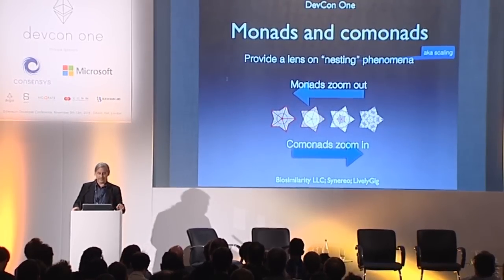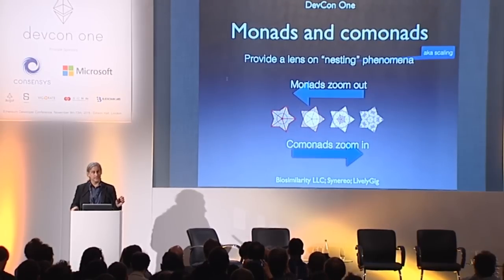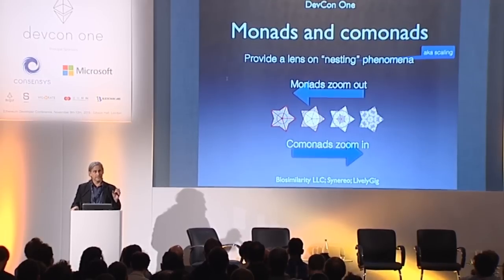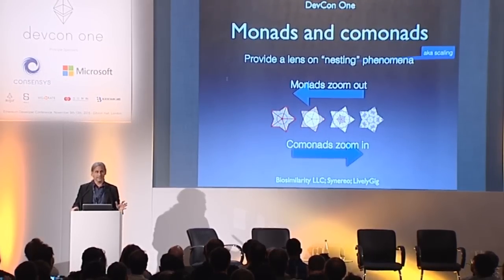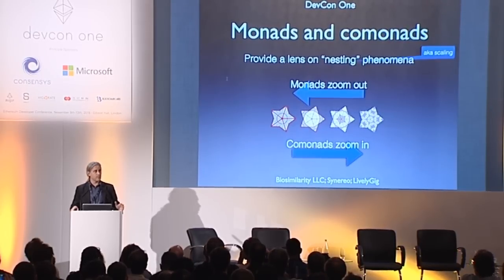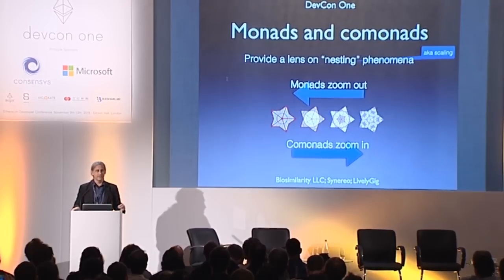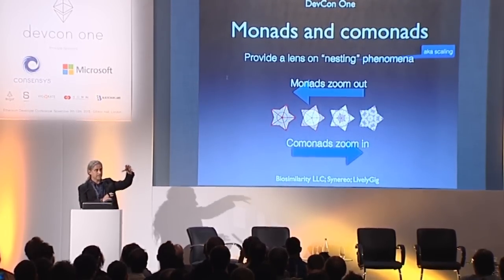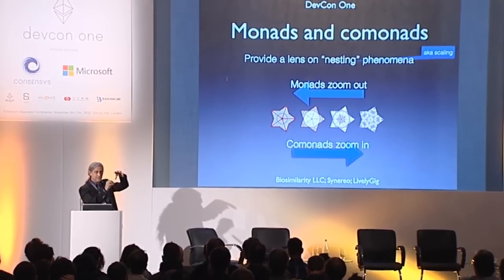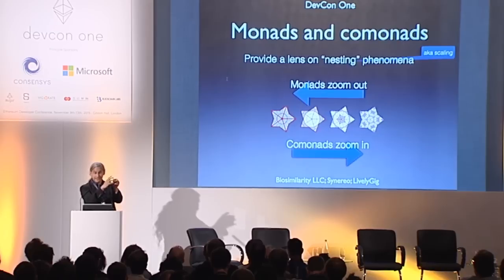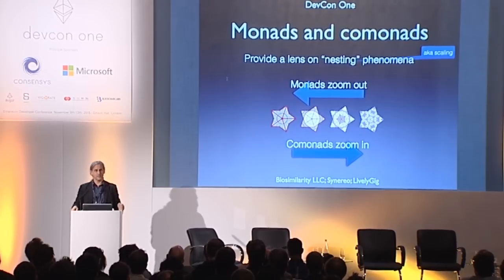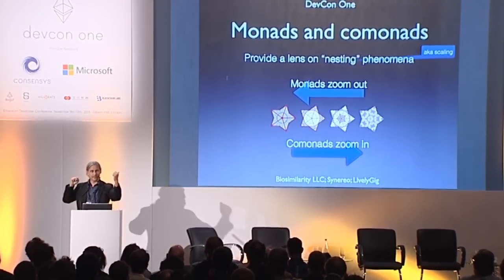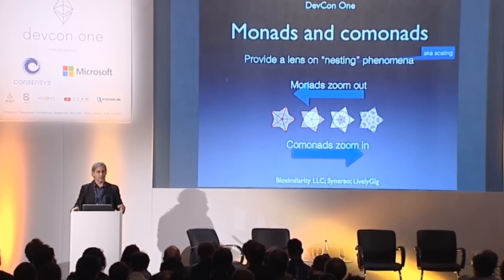The notion of composition has nice formalizations. Since about the 1950s, there's been an appropriately parametric notion of composition formulated first in category theory, given the weird name of a monad. If you pair monads with their dual mathematical widget, the co-monad, composition is kind of like nesting — like Russian dolls, like the tree inside the leaf. Monads give you a way to zoom out, and co-monads give you a way to zoom in on this nesting phenomenon.